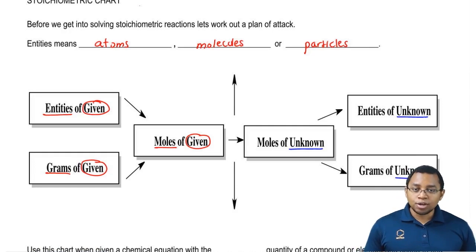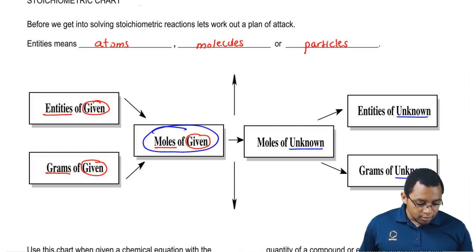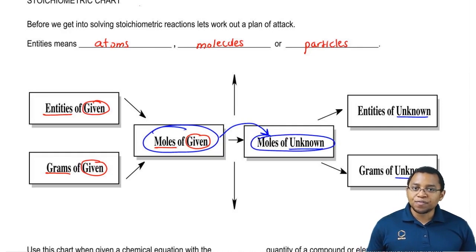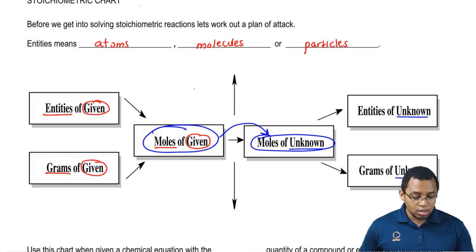Now, the way this works is our main goal is to go from moles of given and jump over to our unknown information. So as we're making the transition from moles of given to moles of unknown, we're basically taking a leap of faith because we're going from an area where we know information to an area where we know nothing at all. So we're going to say that this transition is called the jump.